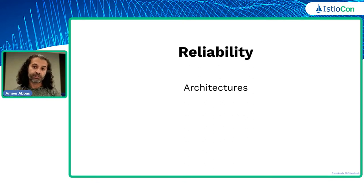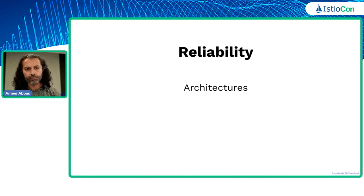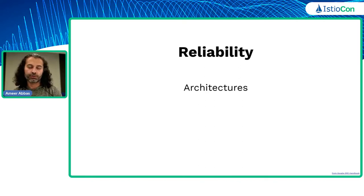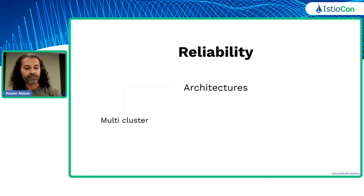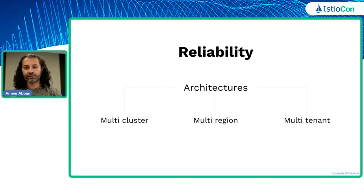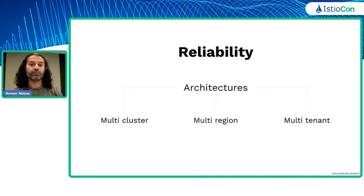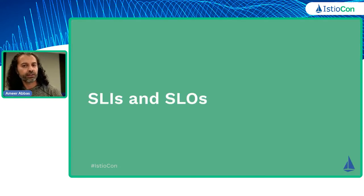Today I'll spend time talking about some implications on reliability and how service mesh can help. We're going to look at certain architecture patterns on Google, but these can apply across the board anywhere. We'll start with simple stuff and build upon those, looking at multi-cluster, multi-region, and multi-tenant, and how these facets work together to give you a reliable architecture.